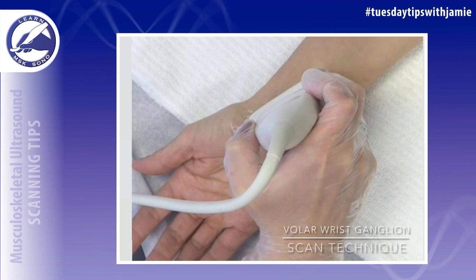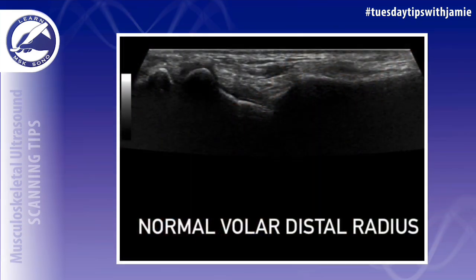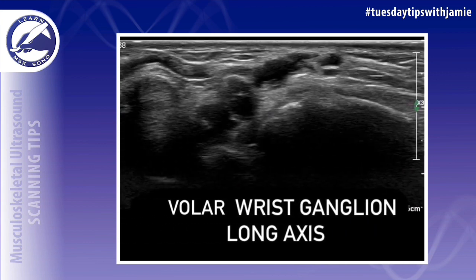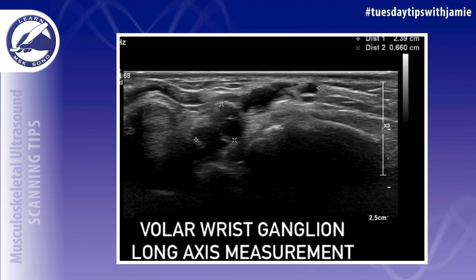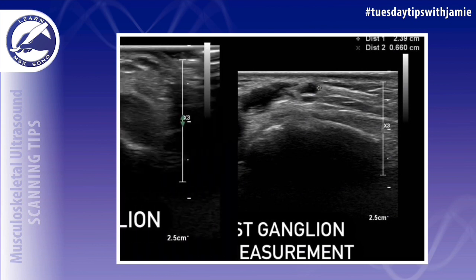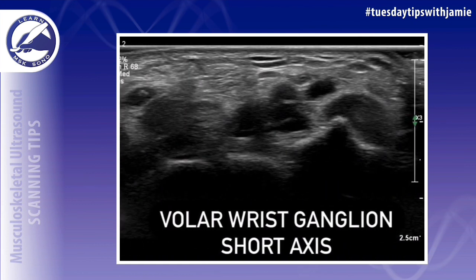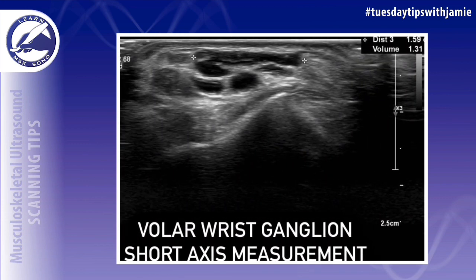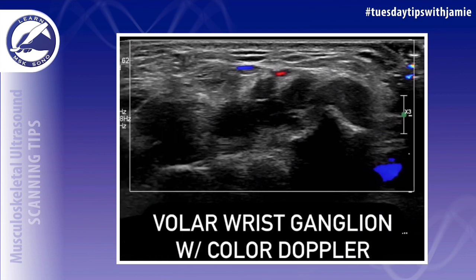If you assess the other side of the wrist on the volar surface, you can elongate the distal aspect of the radius to look for a ganglion cyst here. As you can see, it usually lies just distal to the radius, but it usually arises from the scapho-trapezium joint. The length and AP should also be measured in the long axis, and also the transverse measurement in the short axis, and assess with color Doppler.